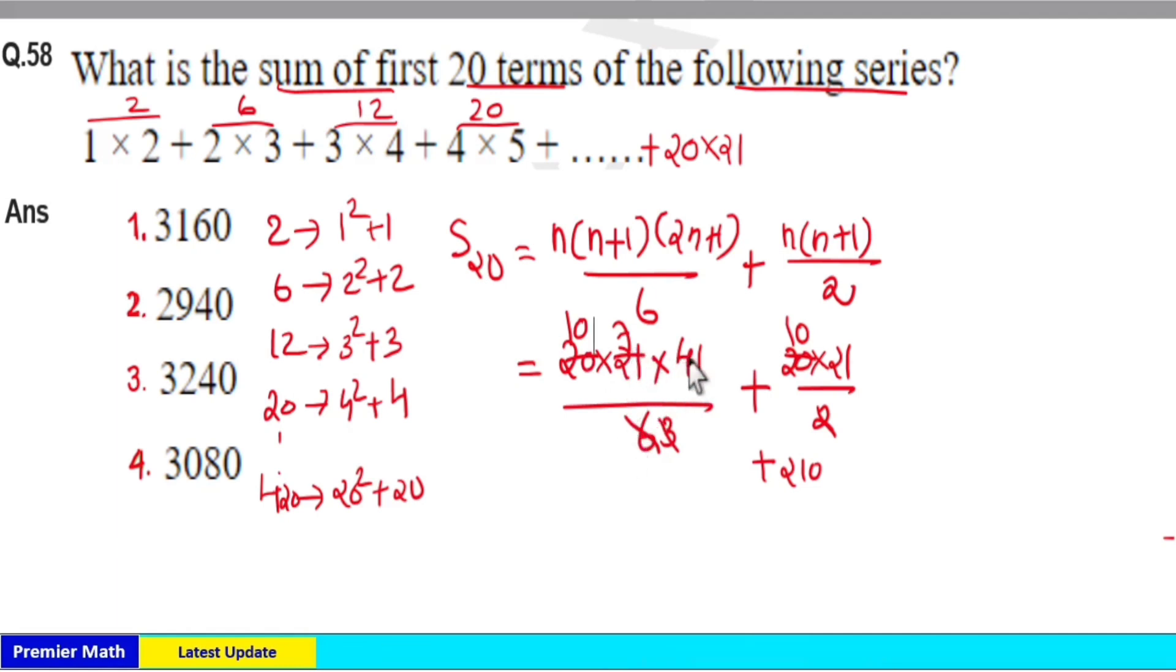7 into 4 is 28, so 287 into 10 equals 2870 plus 210, which equals 3080. So this is 3000 plus 80, 3080. Option 4 is your answer. Sum is equal to 3080.